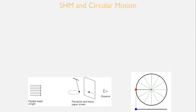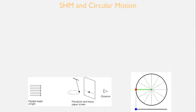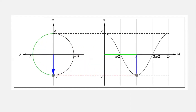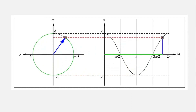In my previous video you had seen that SHM can be represented by sine and cosine function. Today you will see circular motion when projected along horizontal axis can be represented as an SHM.